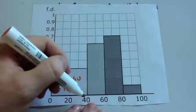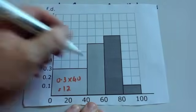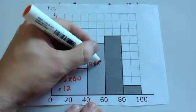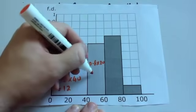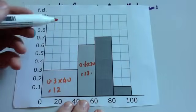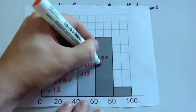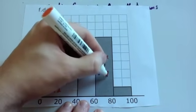The next one, 40 to 60, so that's 20 is the class width, and the frequency density is 0.6. So you're going to do 0.6 times 20. 0.6 times 20 is 12. The next one, the frequency density is 0.7 times, the class width is 20. 0.7 times 20 is 14.